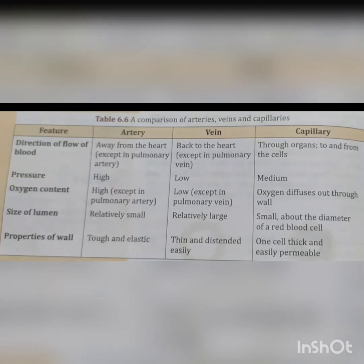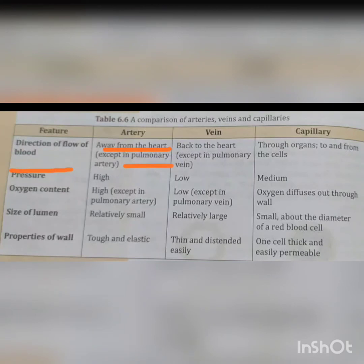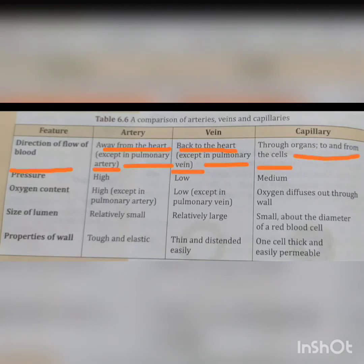Now we will do a comparison between arteries, veins and capillaries. Regarding the direction of flow of blood: in arteries, blood flows away from the heart except in the pulmonary artery. In veins, blood flows back to the heart except in the pulmonary vein. In capillaries, blood flows through the organs to and from the cells. Regarding blood pressure: in arteries it is high, in veins it is low, and in capillaries it is medium.